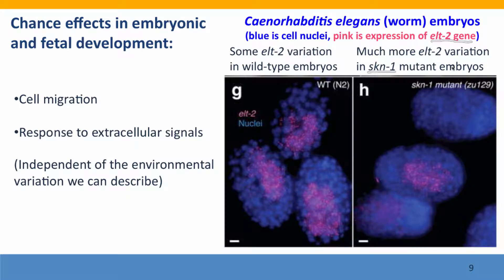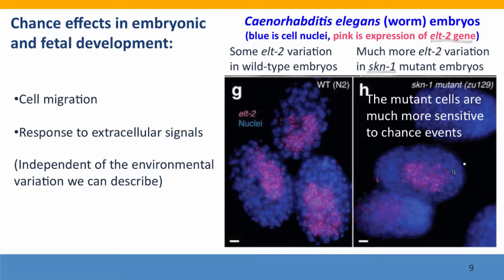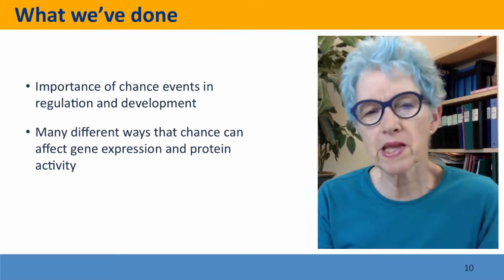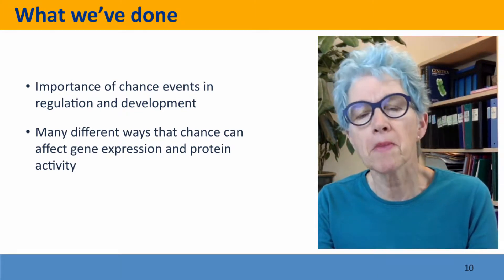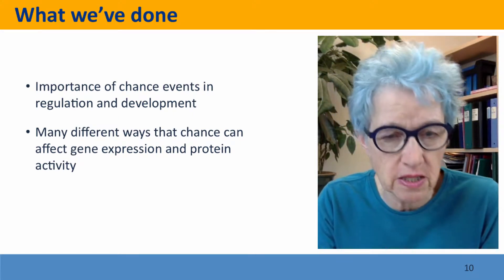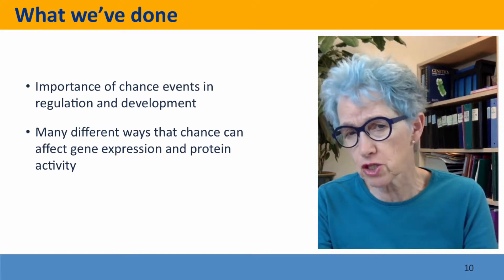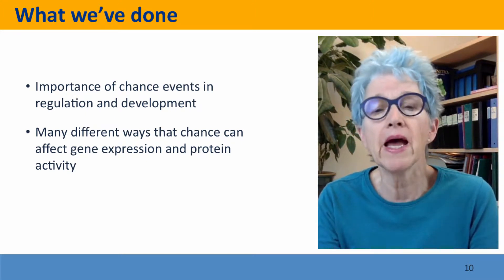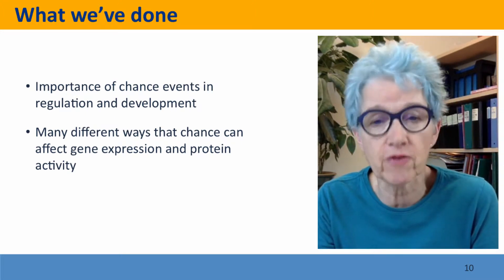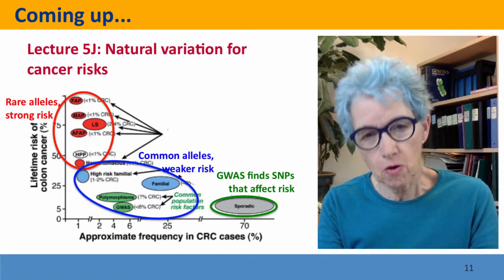Here are cells of a worm that carries a mutation in a particular gene, and this mutation makes the cells much more sensitive to chance events, so that by chance one cell is expressing lots of the protein while the other cells are not. That puts a cap on our consideration of the sources of variation — thinking about the importance of chance events, with an emphasis on chance events at the molecular level, in gene regulation, and in development.